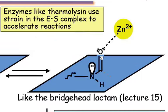Just like the bridgehead lactam from lecture 15, if there is a structural element in the active site of the enzyme, such as a zinc atom or other electron acceptor, that can orient the carbonyl's pi star perpendicular to the amide lone pair, then delocalization of the lone pair is no longer possible. The two orbitals are at right angles and exhibit no net overlap.